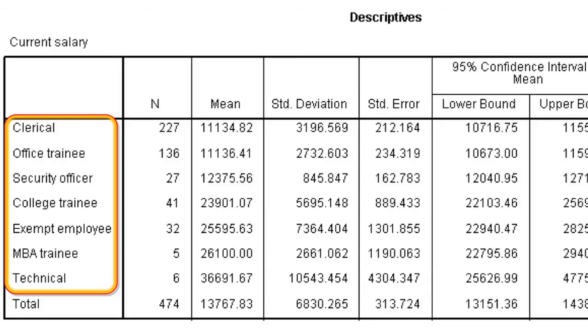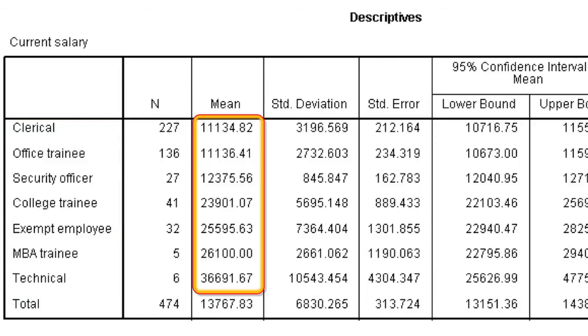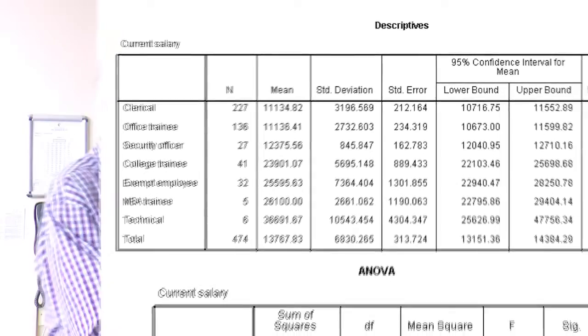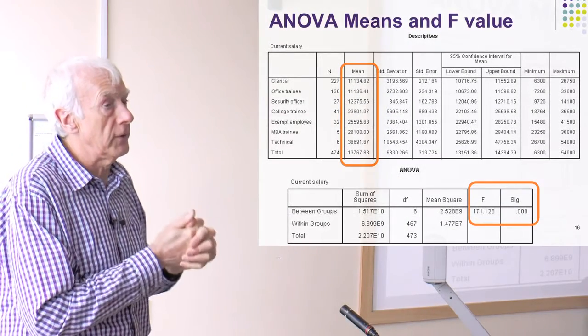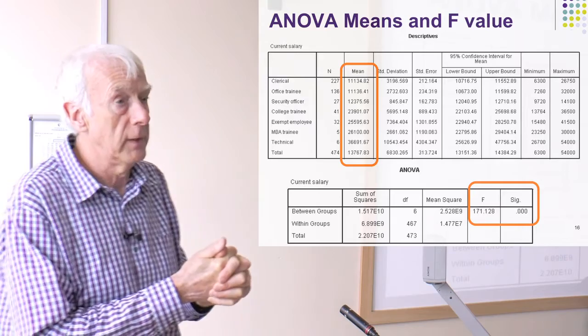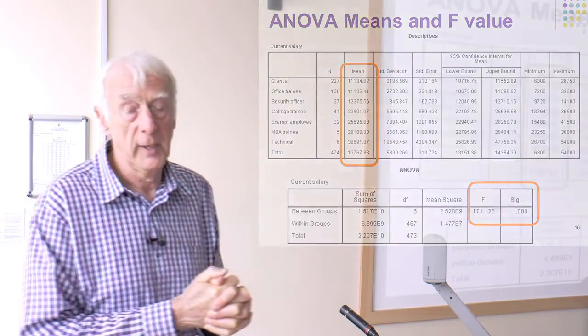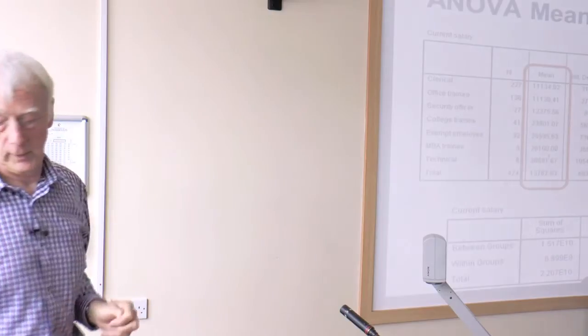But what the difference is, we have to look back at the table of means. That's why I always produce a table of means as well. And in this case, you can see clearly the differences are because the technical group is very highly paid at $36,000 a year in comparison with the clerical and the office trainees and perhaps the security officers, which are on roughly a third of that salary. So you can see, to know what the differences are, you need the table of means. But to see whether that difference is statistically significant, in other words, you couldn't have got it by sheer chance, there is really something going on here. You need the stats to do that.